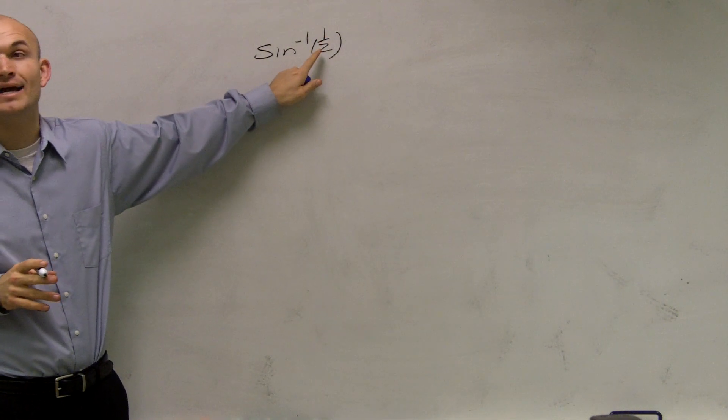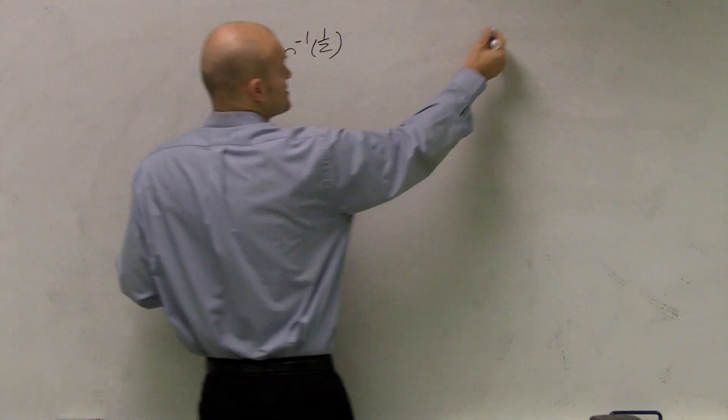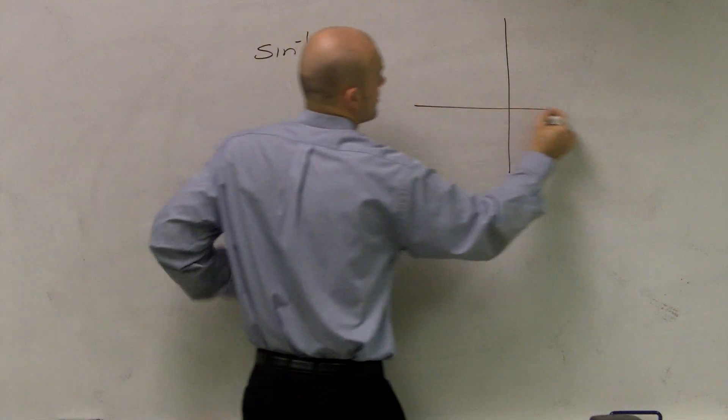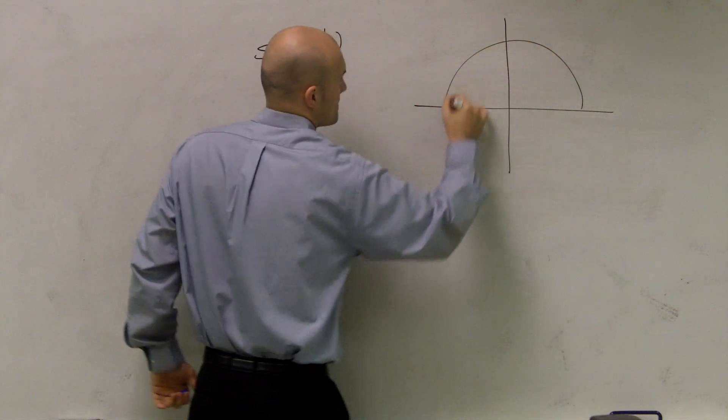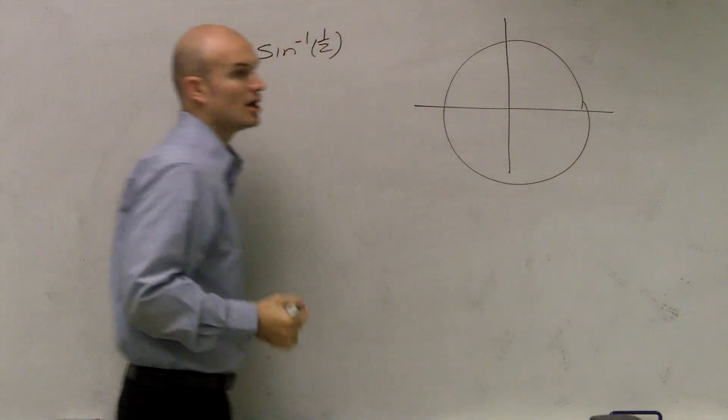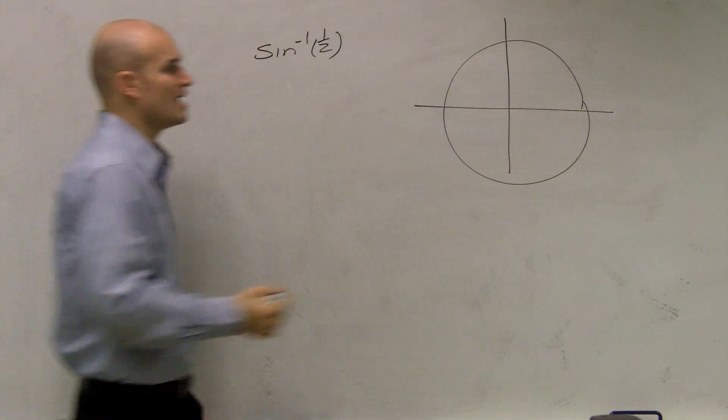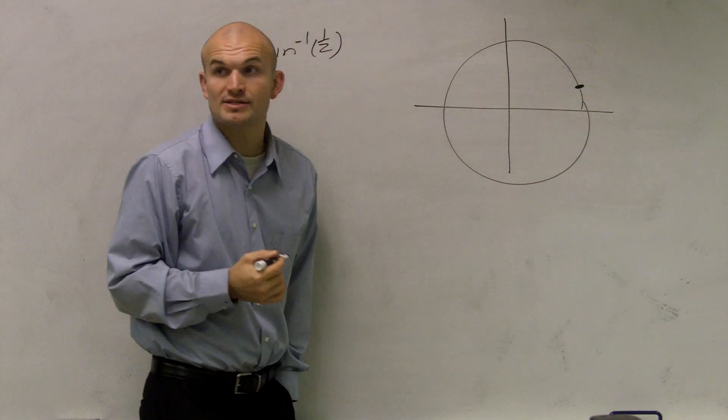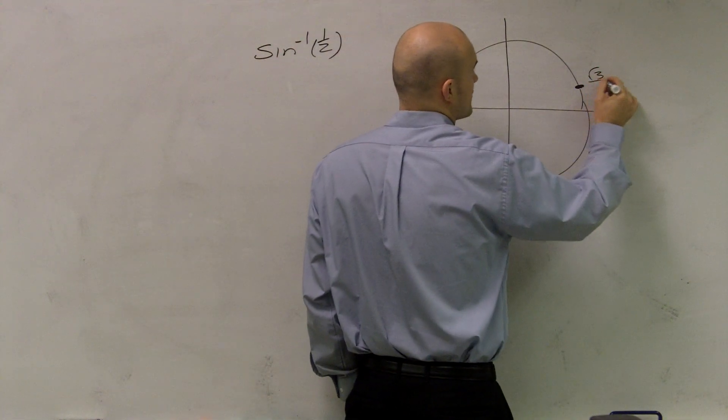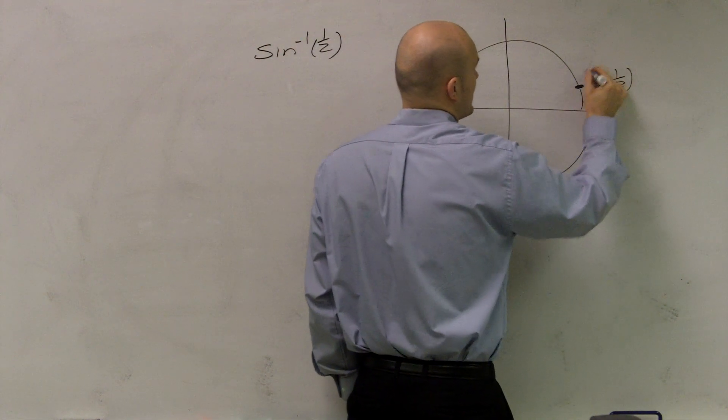when my sine equals 1/2. If I draw a marker in my unit circle, our sine value is going to be 1/2 at 60 degrees, where this would be √3/2, 1/2.